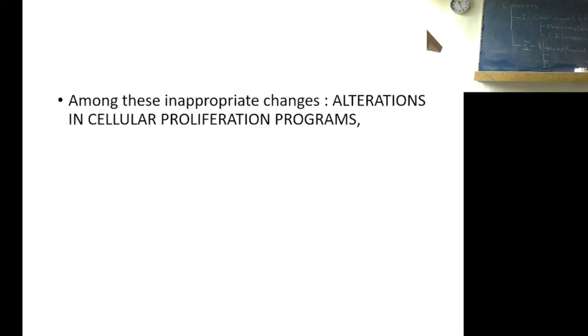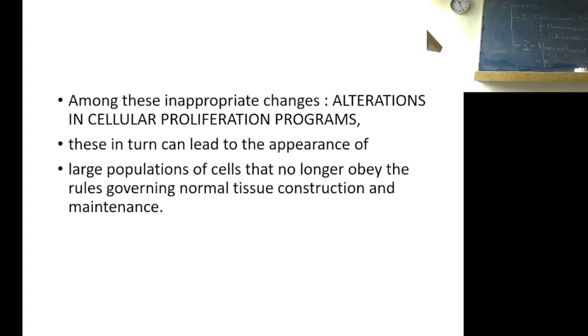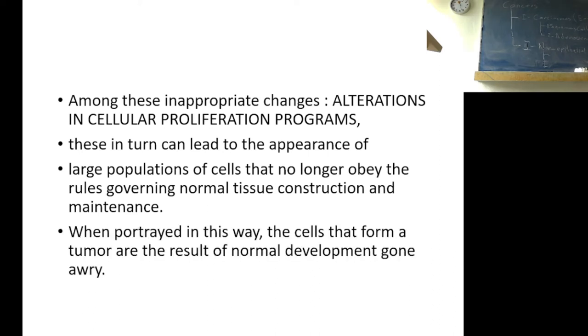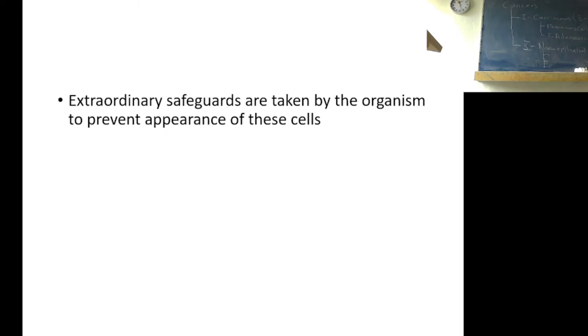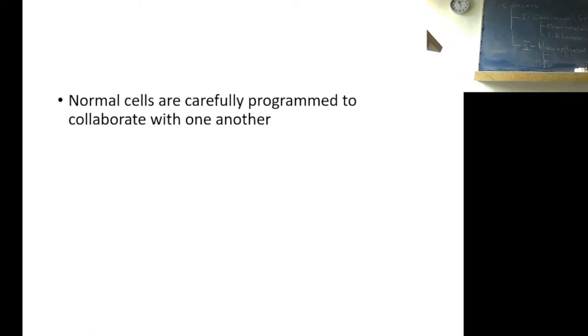Among these inappropriate changes, alterations in cellular proliferation programs. These, in turn, can lead to the appearance of large populations of cells that no longer obey the rules governing normal tissue constructions and maintenance. When portrayed in this way, the cells that form a tumor are the result of normal development gone awry. Extraordinary safeguards are taken by organisms to prevent the appearance of these cells. In the normal cells, normally in our bodies, we have protections against these uncontrolled cells.